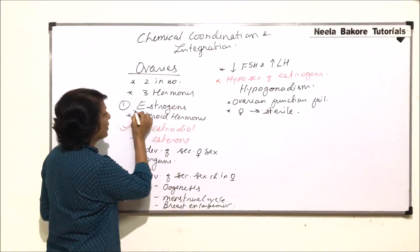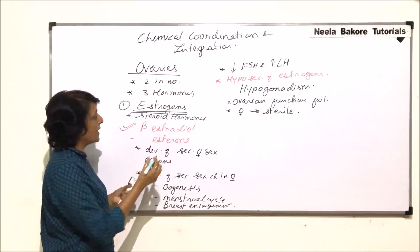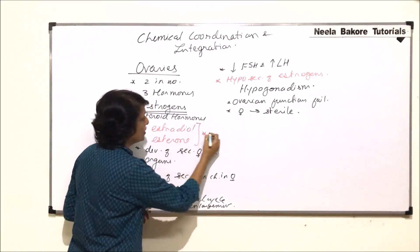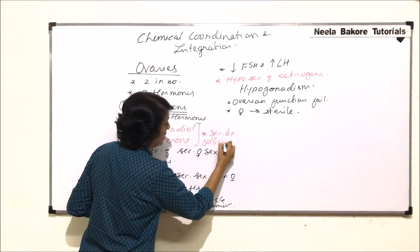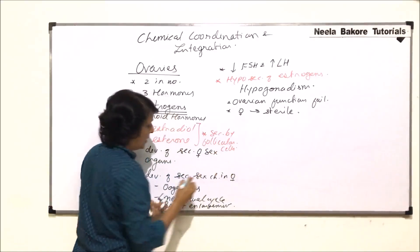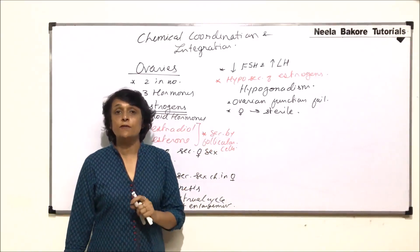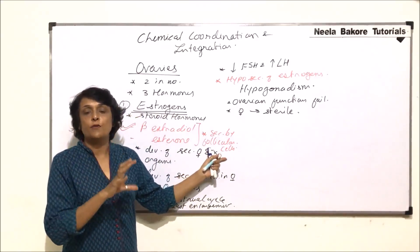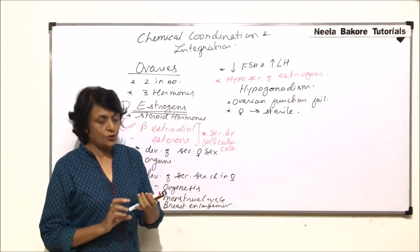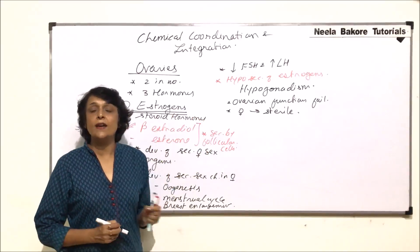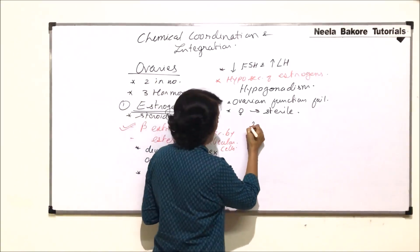One more thing to add here: estrogens are secreted by the follicular cells of the Graafian follicle. In the Graafian follicle there are follicular cells which make the membrane, and they are the ones which secrete estrogens. Now the second hormone produced by the ovaries is progesterone.